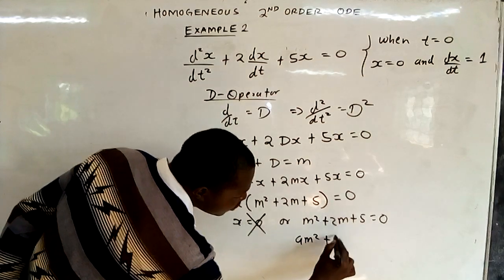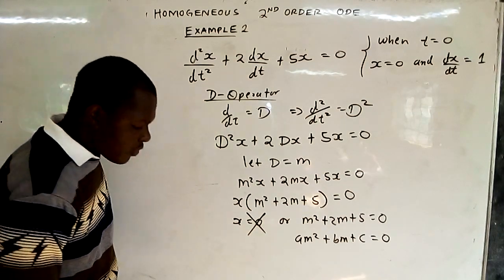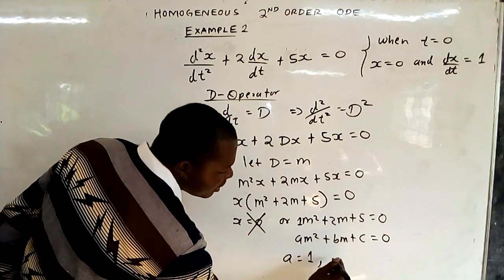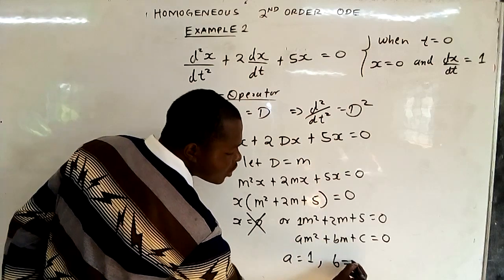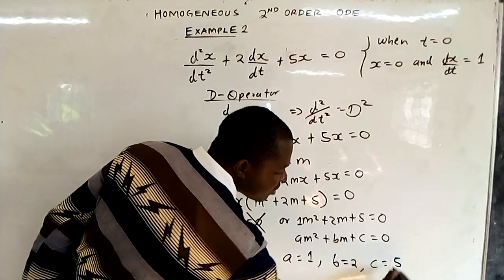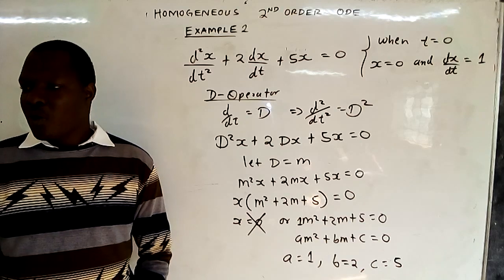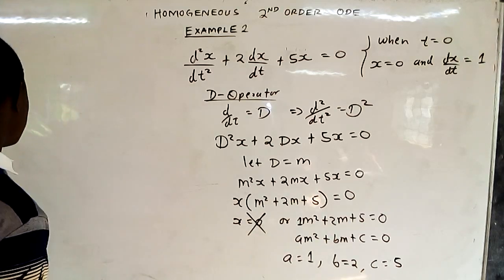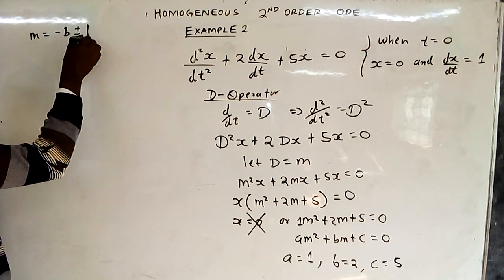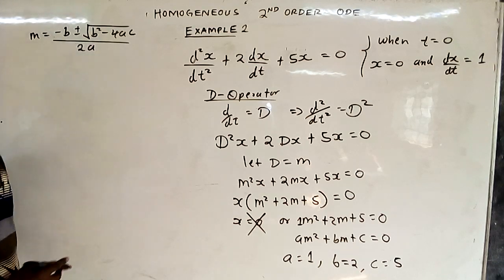This is of the form am squared plus bm plus c equals 0 because it is quadratic. From there, a is the coefficient of m squared which is 1, b is the coefficient of m which is positive 2, and c is the constant term which is positive 5. We now substitute those values into the quadratic formula to get the value of m: m equals negative b plus or minus square root of b squared minus 4ac, all over 2a.